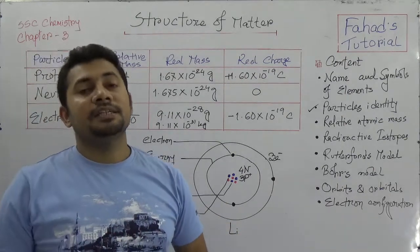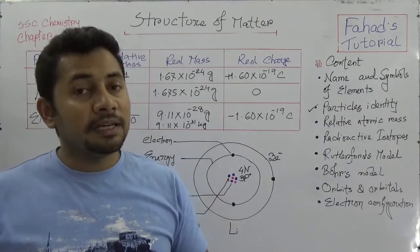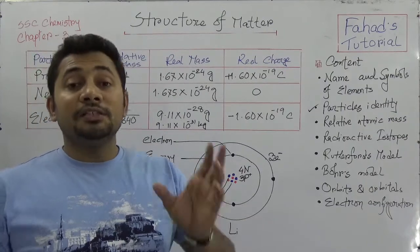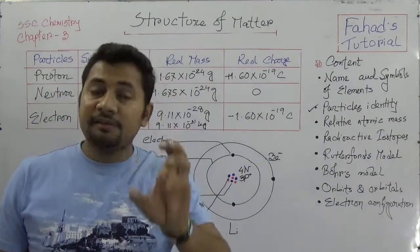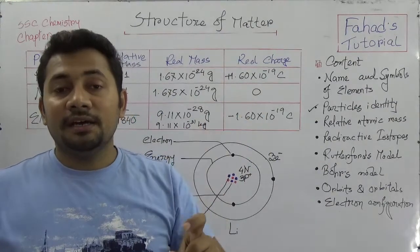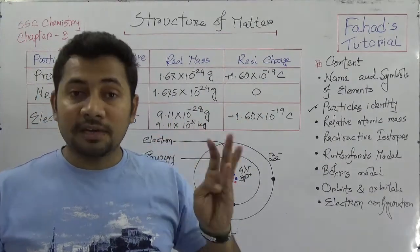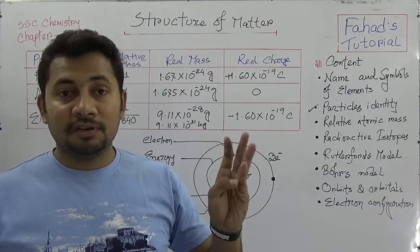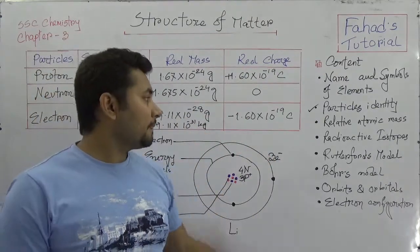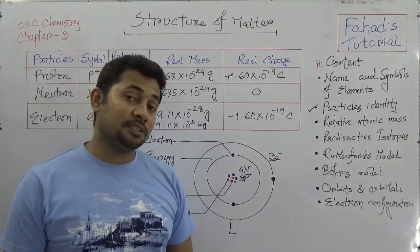In the next video I shall explain the identity of atoms. There will be nucleon number and proton number, and from that class we can understand how to express an atom. From that we can count the nucleon number, proton number, electron number, and even mass number. I shall be explaining these topics chronologically in the following videos.